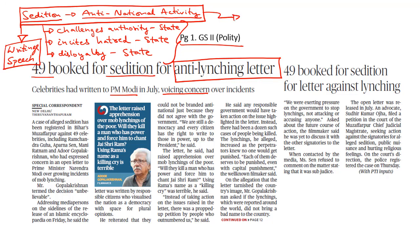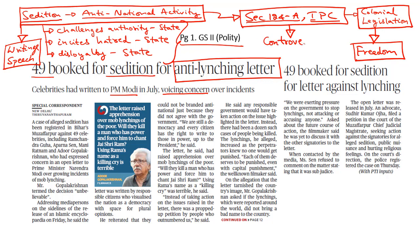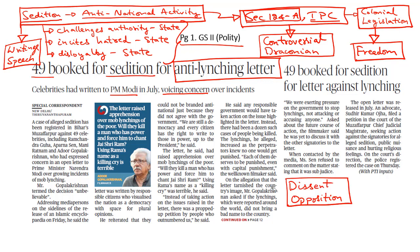In India, sedition has been defined under Section 124A of the Indian Penal Code. This is a highly controversial provision introduced by the colonial government to clamp down on the freedom struggle. Freedom fighters such as Mahatma Gandhi, Bal Gangadhar Tilak, and Nehru were all charged for sedition under Section 124A. Unfortunately, this provision has been carried forward into post-independent India and is referred to as a draconian law. The problem with Section 124A is that it provides a very wide definition of seditious activities and gives tremendous discretionary powers to the government, which can be easily misused to stifle dissent and opposition.